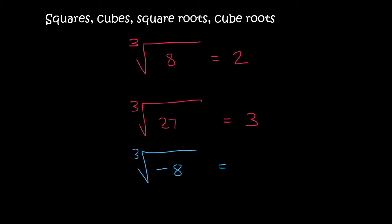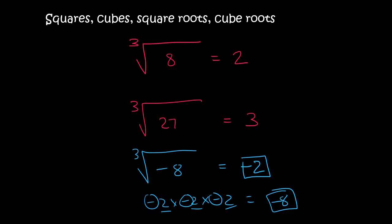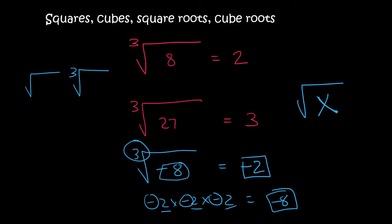What about the cube root of minus 8? Can you have a negative with these? What if the answer was minus 2? Let's see: minus 2 times minus 2 times minus 2. Well, 2 times 2 times 2 is 8, and three negatives makes a negative. So yes, we can have a negative inside a cube root. But you can't have a negative inside a square root. A square root looks like this, and a cube root has a 3. So you can't have a negative inside a square root, but you can have a negative inside a cube root.